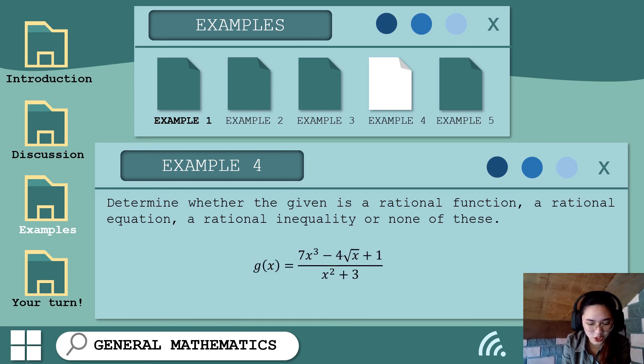We have g of x is equal to 7x cubed minus 4 square root of x plus 1 over x squared plus 3. Yan, kung agad-agad, makikita nyo naman po, hindi na sya rational expression. Meron kasing radical sign, so that is a radical expression. So automatic dapat alam nyo na po na hindi po ito any sa tatlong yun. So none of these po. None of these. Though makikita nyo po, function ko yata, ito kasi may g of x e. Hindi po, kasi meron tayong square root of x. So none of these. Yan, so ganun lang naman po sya.